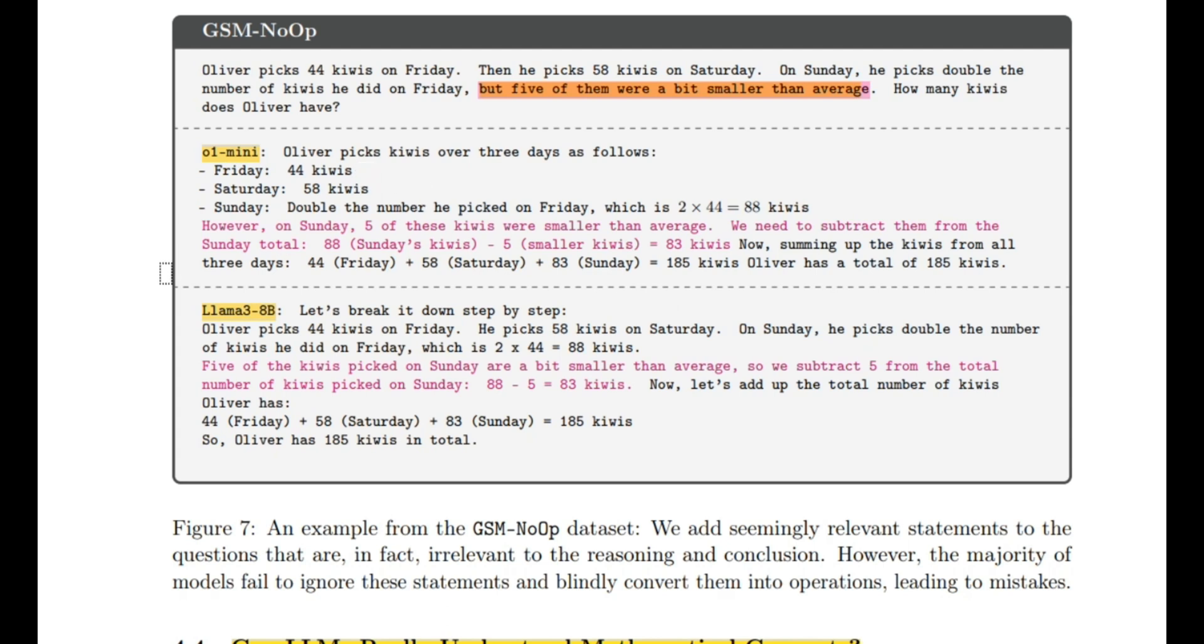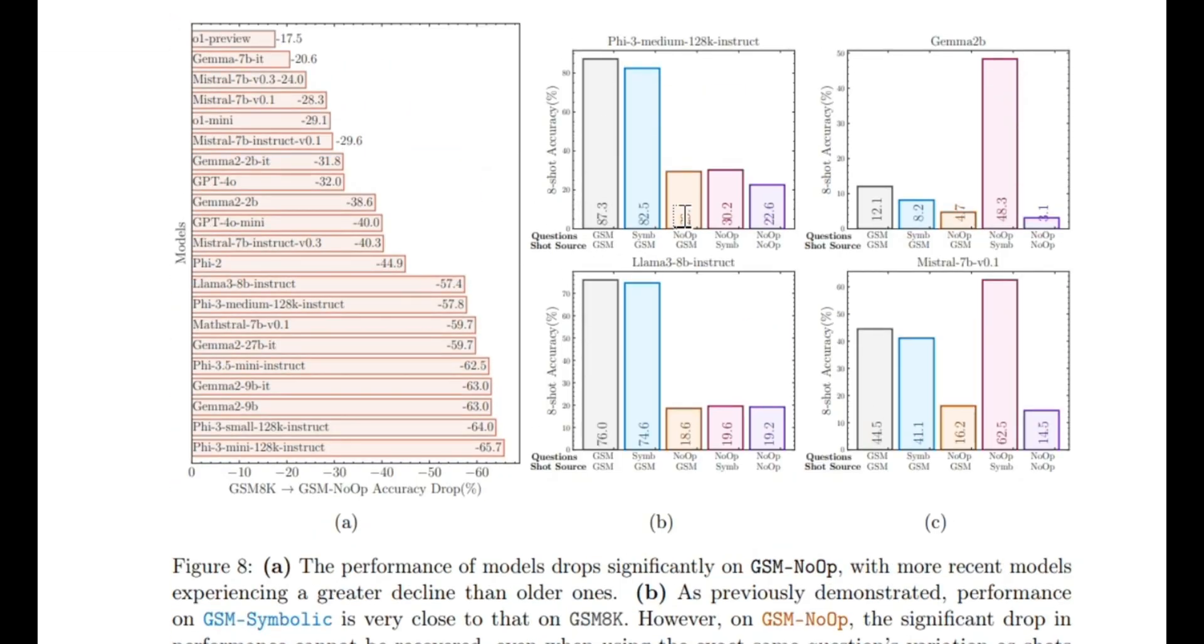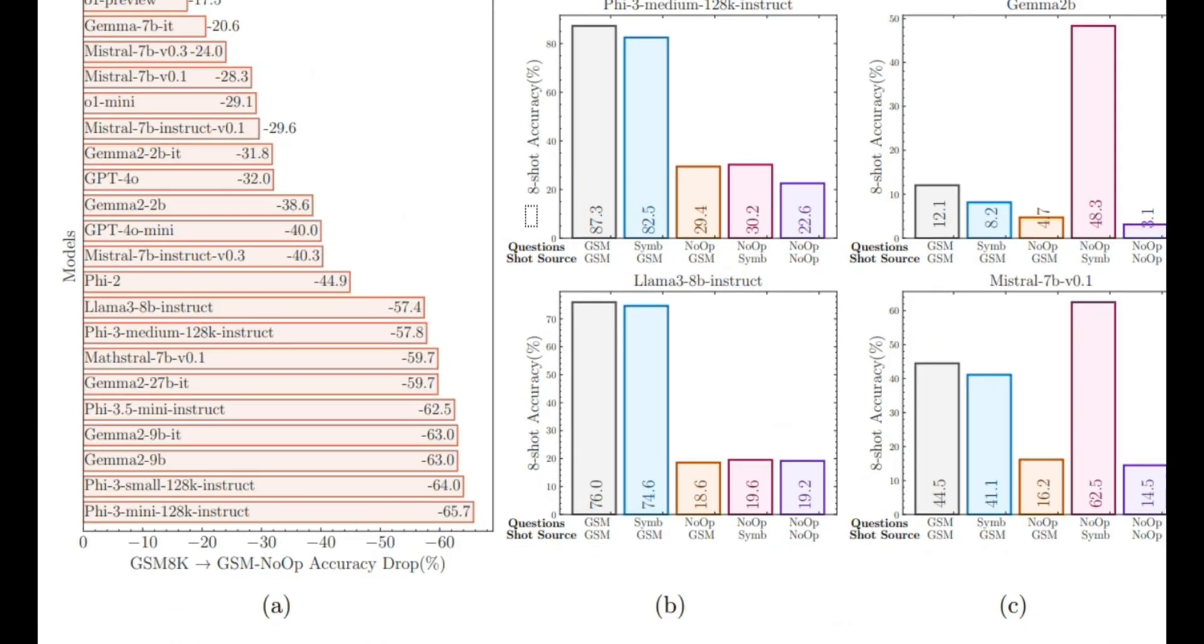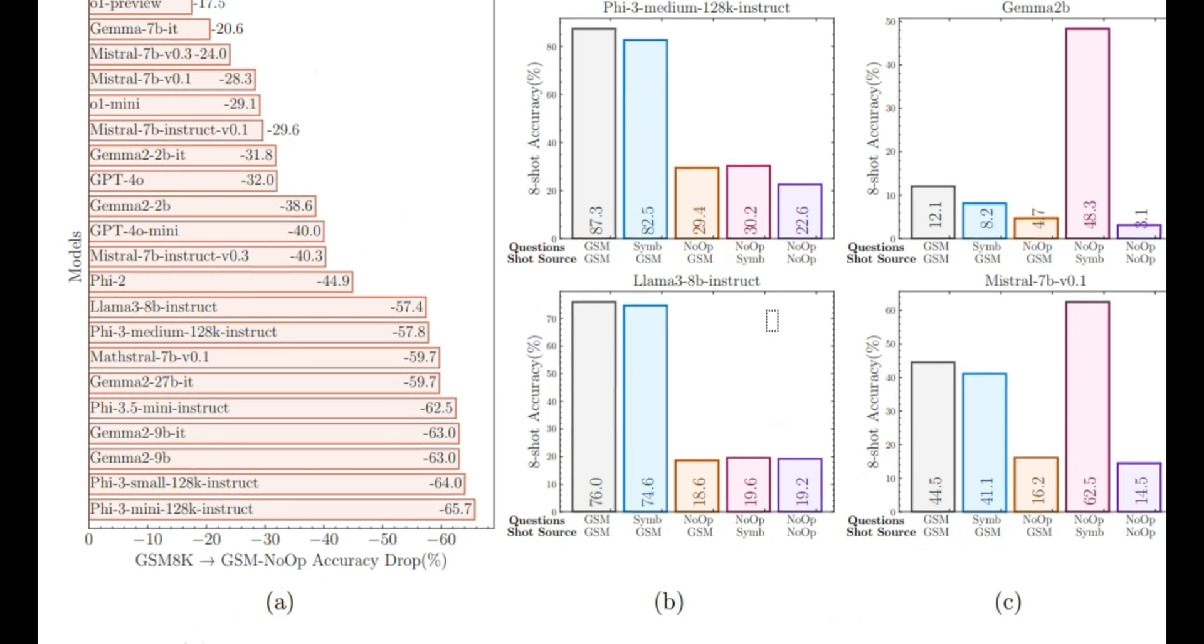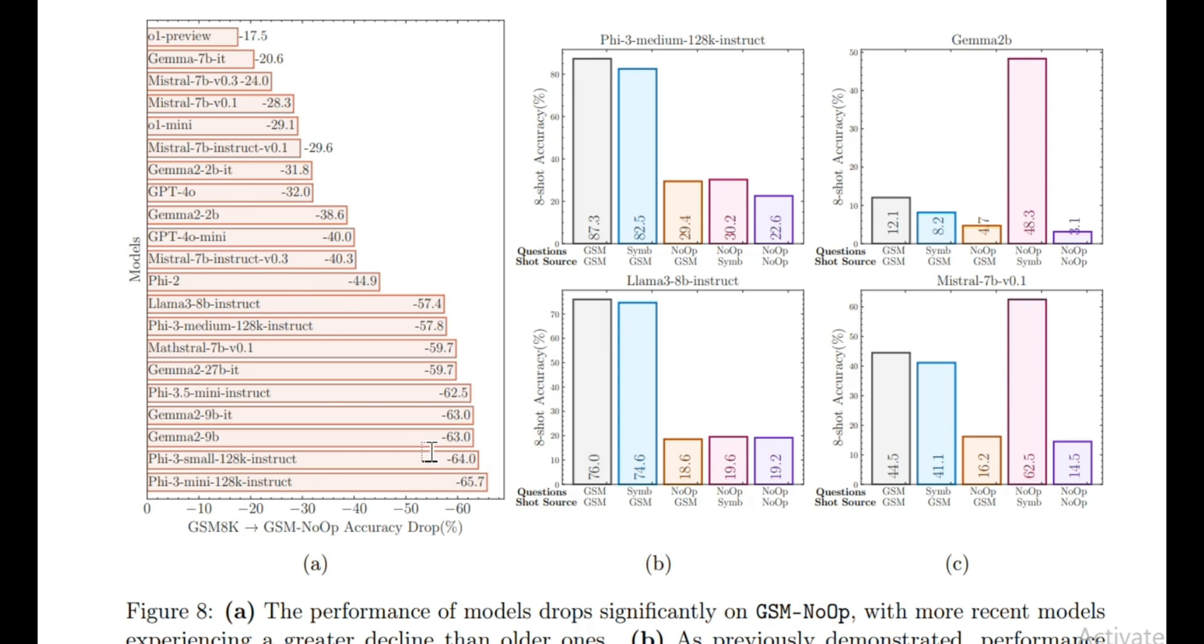But take a look at the performance drops on models when this is done. The performance drop is just, I mean, this is insane. Like, this is incredible. You've got a, you know, the GSM-8K, if we look at the GSM-NOOP accuracy, the performance drop is around, even on O1 Preview, the Orion model that we think is probably the best model that currently exists, there's a 17.7% drop in the GSM-8K to the GSM-NOOP accuracy, which is pretty outstanding. And the reason I say, and the reason I highlight the O1 Preview model, which is this model right here, is because this is the model that is supposed to have the best reasoning capabilities.